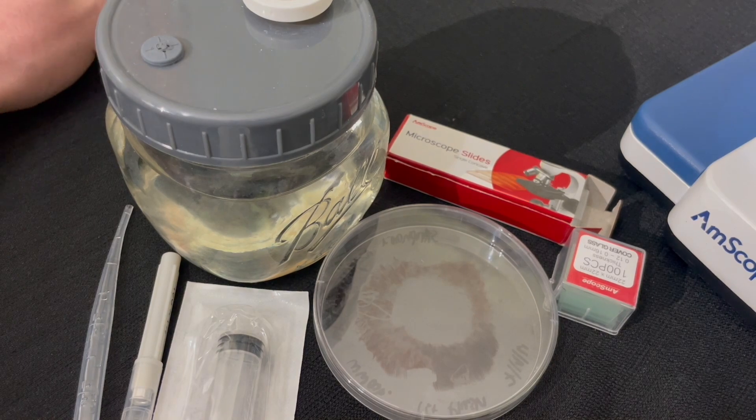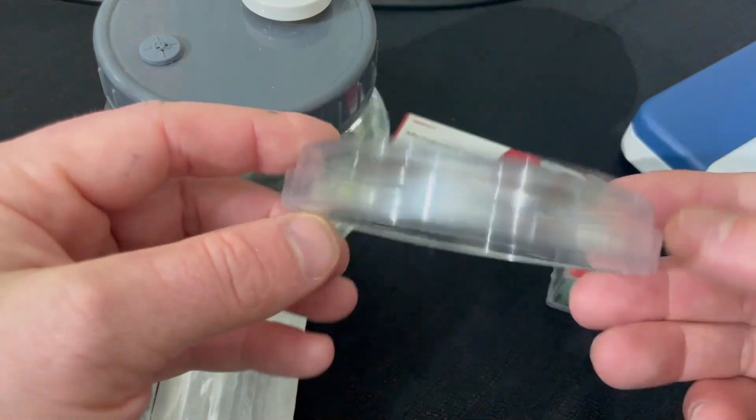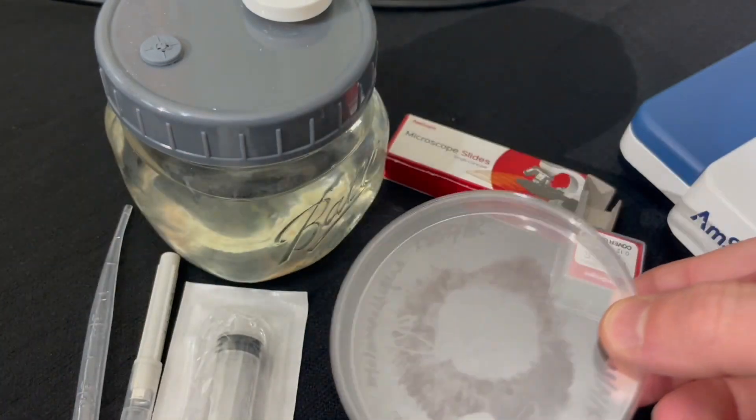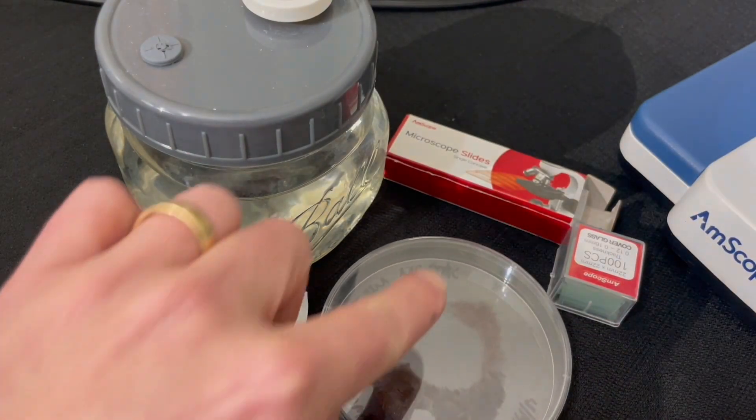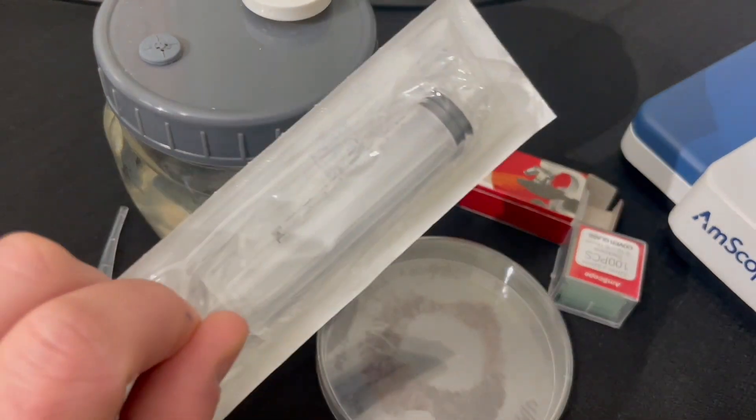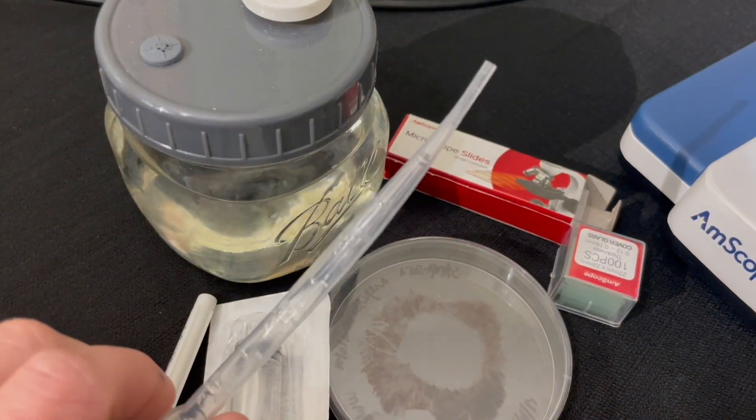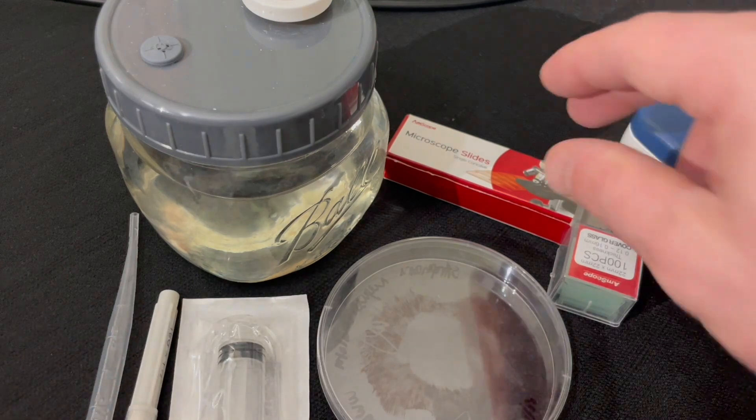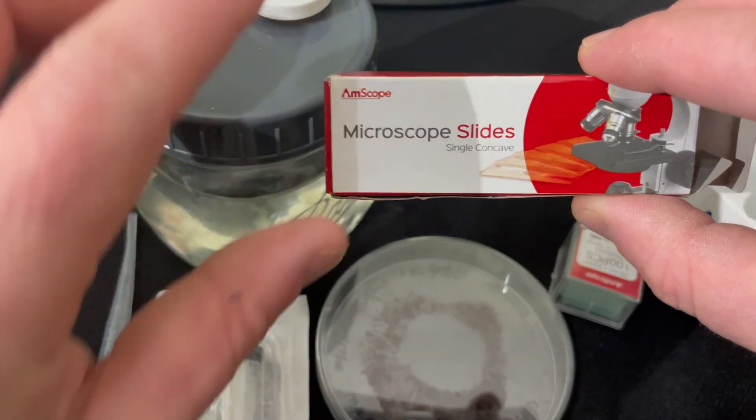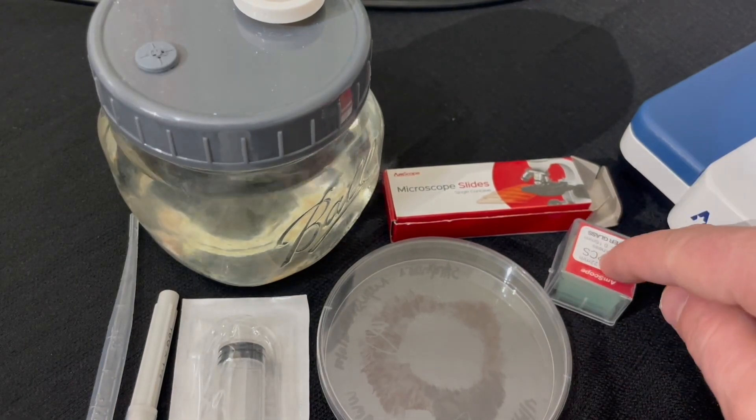All right, so in order to prepare our slide I do have this king stropharia spore print that I've been working off of a couple times. We're just going to take some spores from this region over here. So I have a sterile syringe, a sterile needle, a pipetter. We have concave glass slides, some sterile water here, and some slide covers.